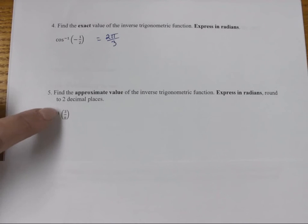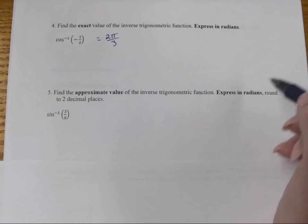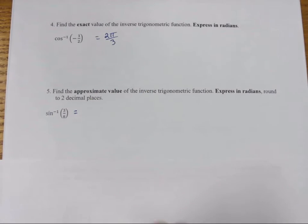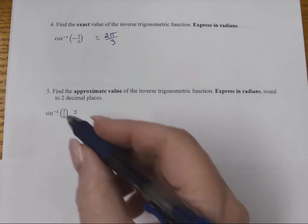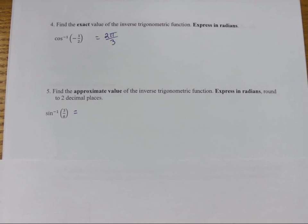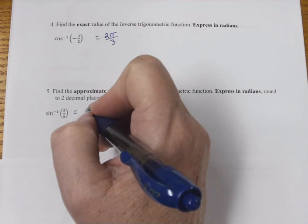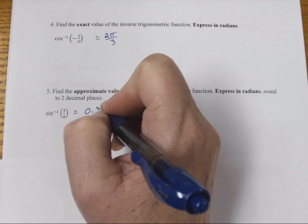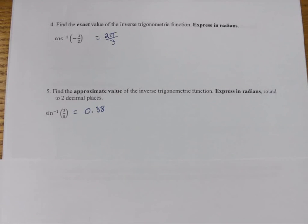If we're looking at the sine inverse of 3/8 and we want to get radians, remember, we're going to have to be in radian mode. So we put that in our calculator, doing the second sine function to get the inverse function of sine of 3/8. That's going to be equal to 0.38, to two decimal places.